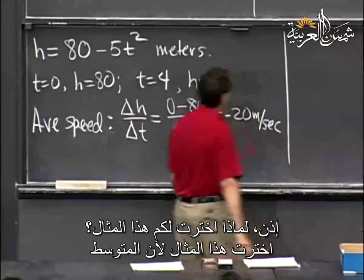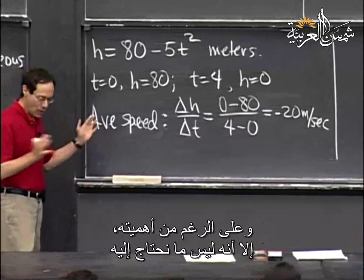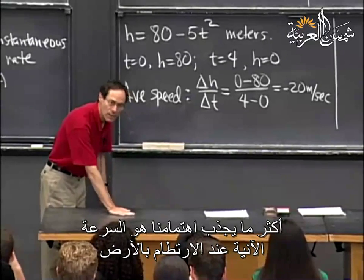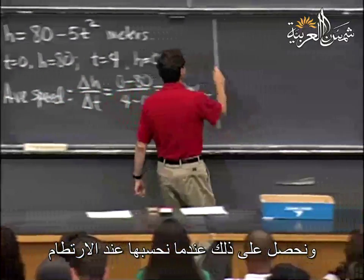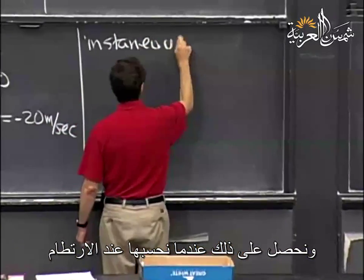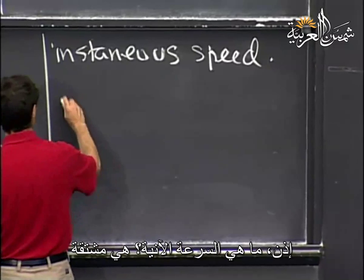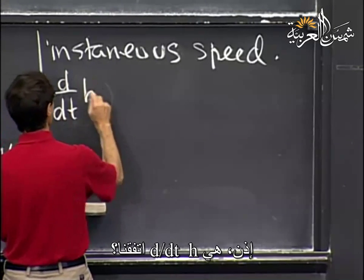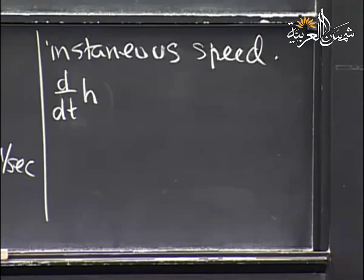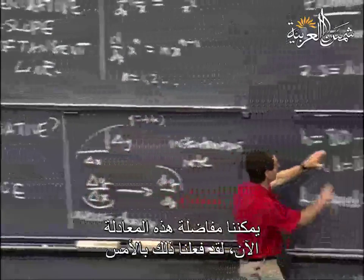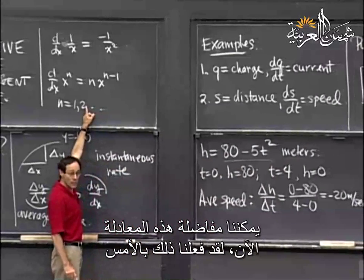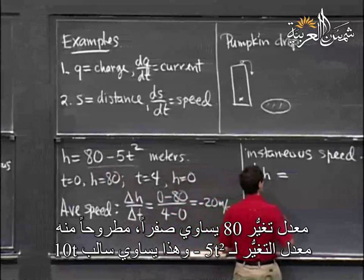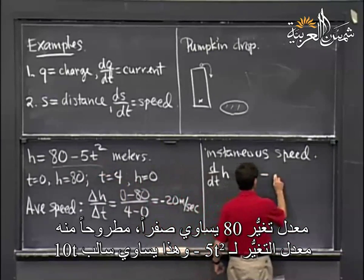The average speed, although interesting, is not really what anybody who goes to the event cares about. What we really care about is the instantaneous speed when it hits the pavement. That's the derivative: d/dt of h. Using our formulas, d/dt of 80 is 0, and d/dt of 5t² is 10t, so dh/dt = -10t.